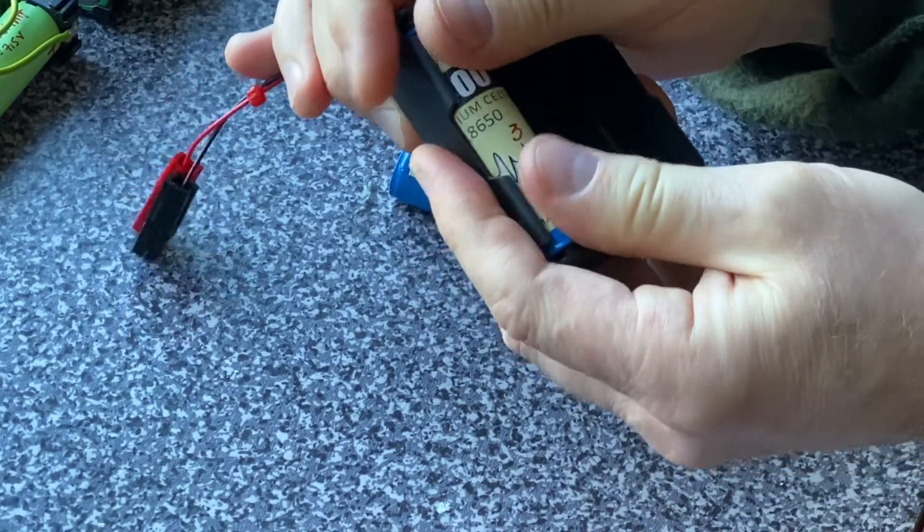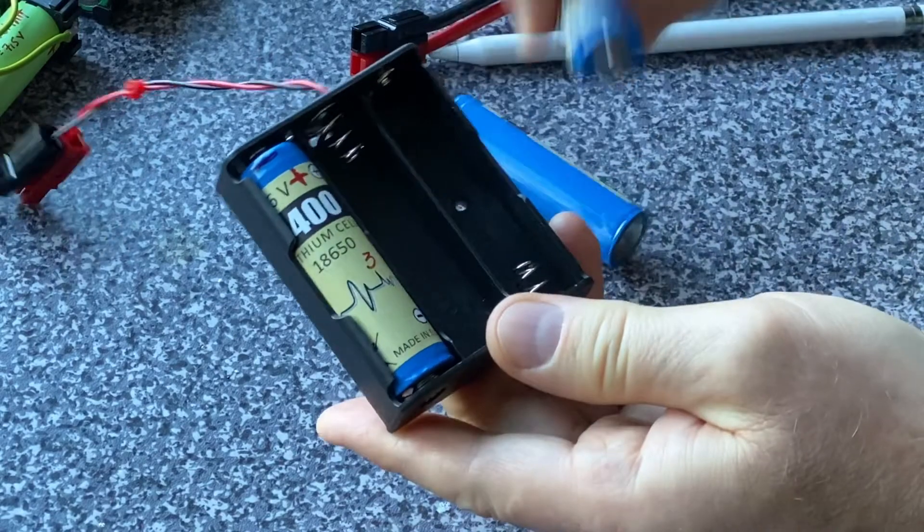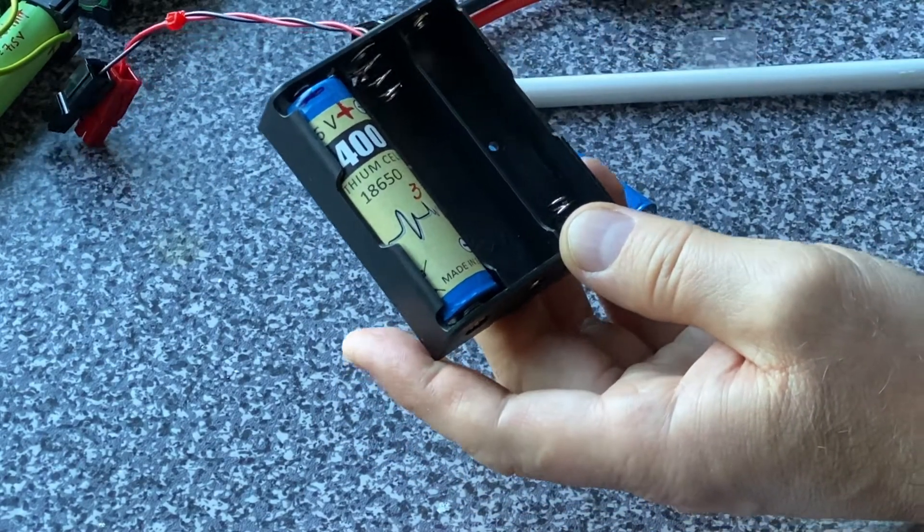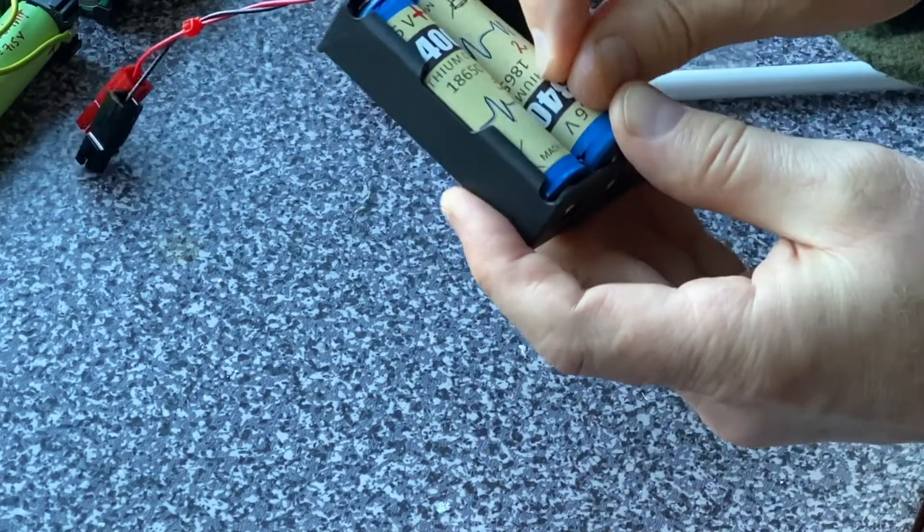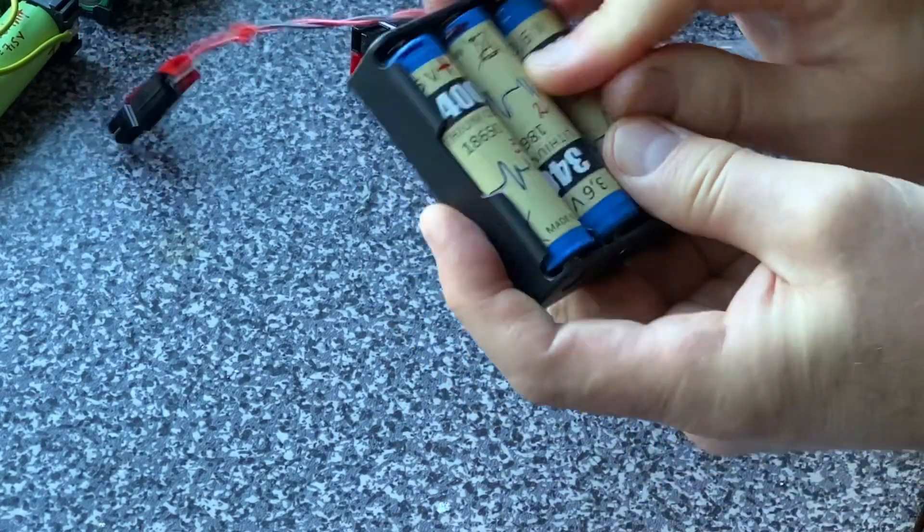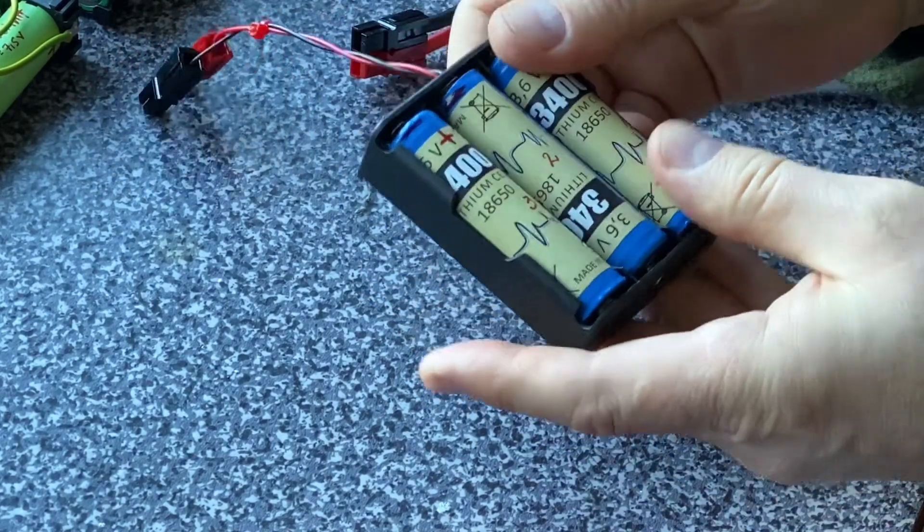Like this. It goes very easily here. Plus is here. Minus is here. And with this the opposite. Minus is here. Plus is here. And here again. Minus down. Plus is up. That's it.